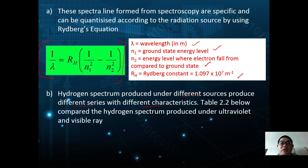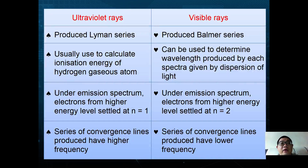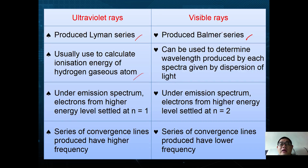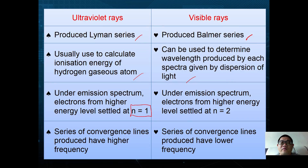The hydrogen spectrum produced under different sources gives different series. The Lyman series is produced by ultraviolet rays and is used to calculate the ionization energy of a gaseous hydrogen system — electrons fall to the ground state at n = 1. The Balmer series is produced by visible rays and can be used to determine the wavelength of each spectral line by dispersion of light — electrons settle at the energy level n = 2. The Lyman series therefore has a higher frequency than the Balmer series.